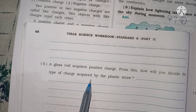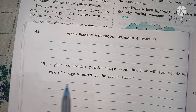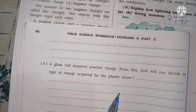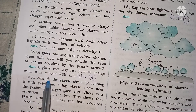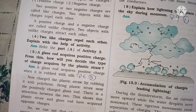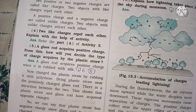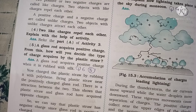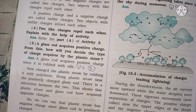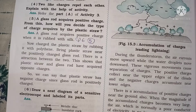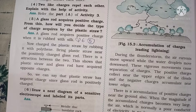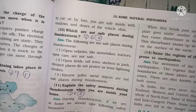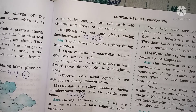Page 68, Question 6, Question 5: A glass rod acquires positive charge. From this, how will you decide the type of charge acquired by a plastic straw? The answer is: a glass rod acquires positive charge when rubbed with silk. Now charge the plastic straw by rubbing it with polythene. Bring the plastic straw near the positively charged glass rod. There is attraction between the two. This shows that the plastic straw and glass rod have acquired opposite charges, so we can say that the plastic straw has a negative charge since the glass rod is positively charged.